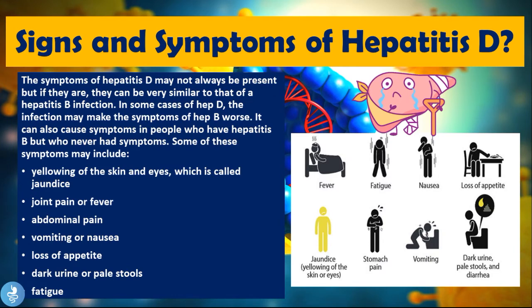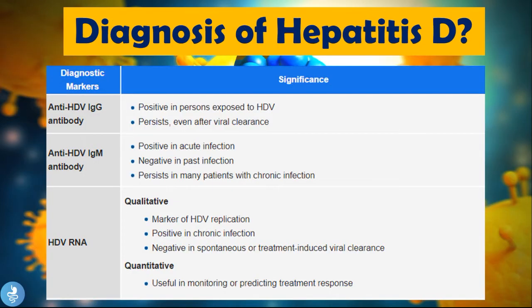The symptoms of hepatitis D may not always be present, but if they are, they can be very similar to a hepatitis B infection. In some cases, hepatitis D can make the symptoms of hepatitis B worse, or cause symptoms to appear in people who have hepatitis B but were previously asymptomatic. Symptoms may include jaundice — a yellowing of the skin and eyes — joint pain, fever, abdominal pain, vomiting or nausea, loss of appetite, dark urine or pale stools, and fatigue.